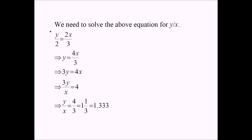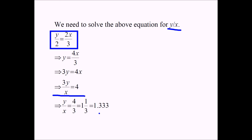Here is our equation from the previous slide: y over 2 equals 2x over 3. I will solve it by eliminating the denominators. Multiplying both sides by 2 gives y equals 4x over 3. Multiplying both sides by 3 gives 3y equals 4x. Since I am looking for y over x, I divide both sides by x, then divide both sides by 3 to isolate y over x, and I get y over x equals 4 over 3, or 1 and one-third, or approximately 1.333. So the original height of the longer candle was 1 and one-third times as long as the original height of the shorter candle. This is my answer.